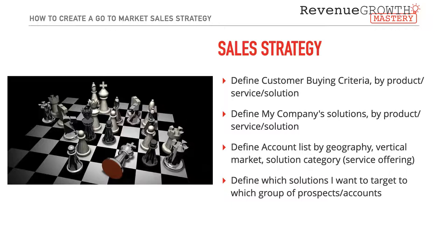Next, get into the Sales Strategy. Define customer buying criteria by product, service, or solution — understand what criteria prospects need to buy from you. Know the pain points that make a prospect a likely candidate for what you offer. Then define your company solutions by the products and services you provide, mapping your value to each of those areas directly to their care-abouts. Define solutions after you understand needs — otherwise you're just creating a product and hoping someone buys it.